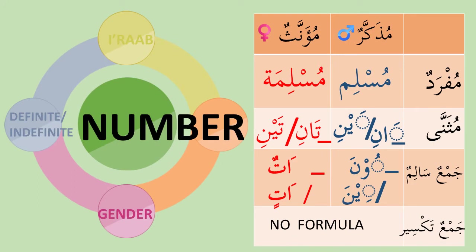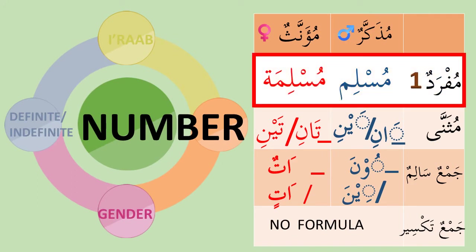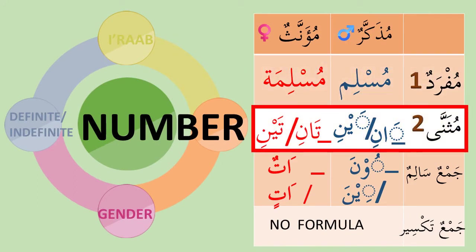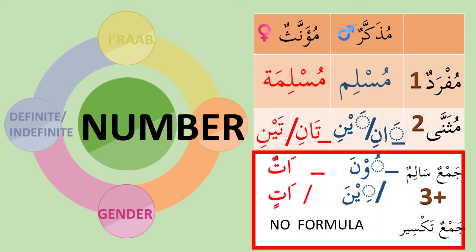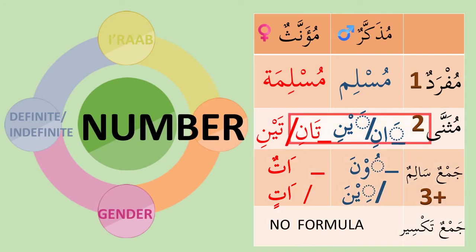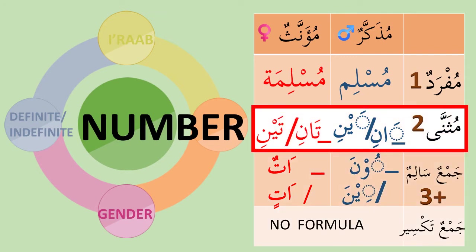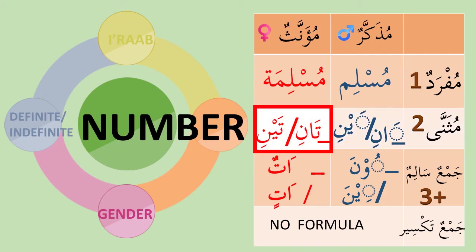The second property is number. Isim can be singular (mufrod), dual (muthanna), or plural (jama'). Jama' in Arabic refers to three or more. The dual isim or muthanna is formed by adding the suffix -ani or -aini. In the case of feminine dual isim, the tamarbutah becomes a regular ta, so the suffix becomes -tani or -taini.